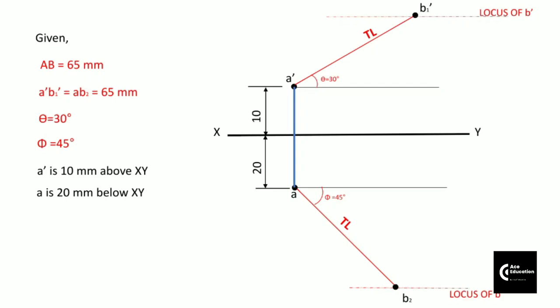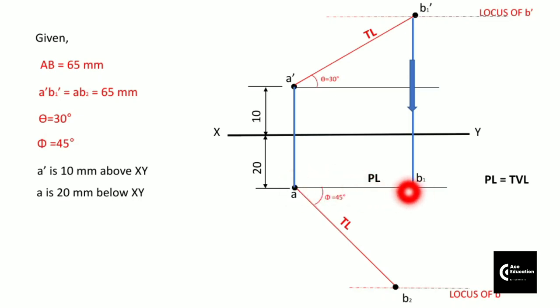Now we have the true length in front view. We know that if we are getting true length in front view, its projection in top view would be a line parallel to the XY line. We will draw its projection downwards until we get a line parallel to the XY line, and here we get the projection of point B1' as B1 in top view. The plan length is always equal to the top view length. So we will take the AB1 distance in a compass and from point A draw an arc. Wherever this arc meets the locus of point B, that point will be point B itself. Join A and B by a straight line — this is the top view.